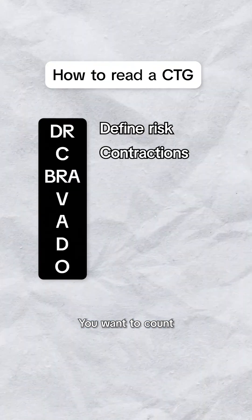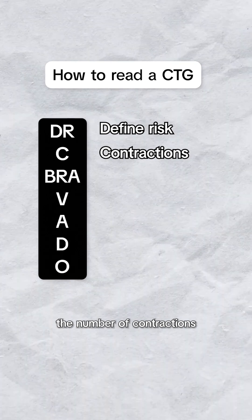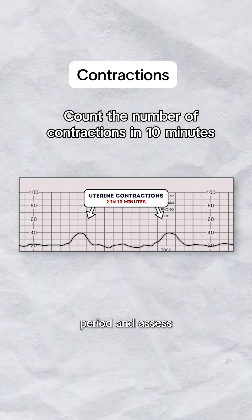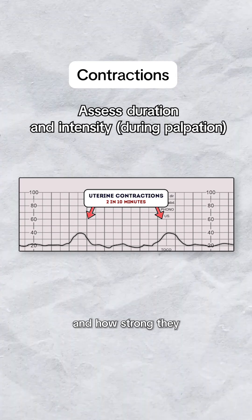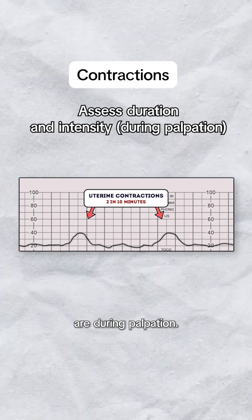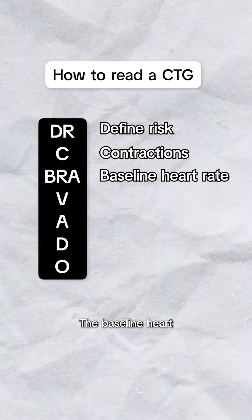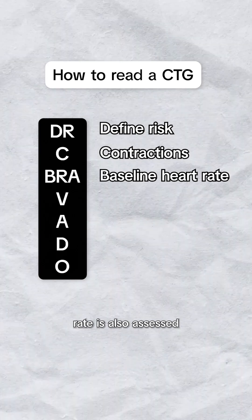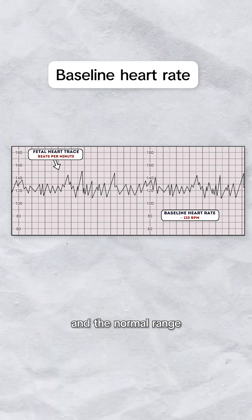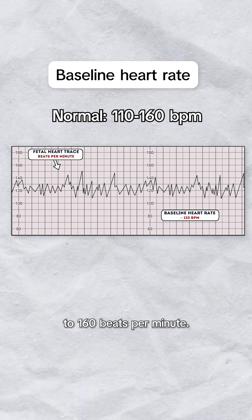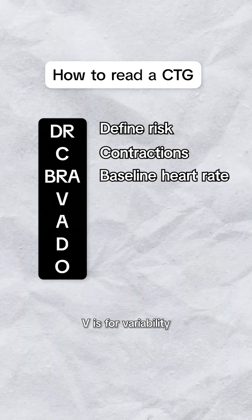C is for contractions. You want to count the number of contractions in a 10-minute period, and assess how long they are and how strong they are during palpation. The baseline heart rate is also assessed in a 10-minute window, and the normal range is anywhere from 110 to 160 beats per minute.